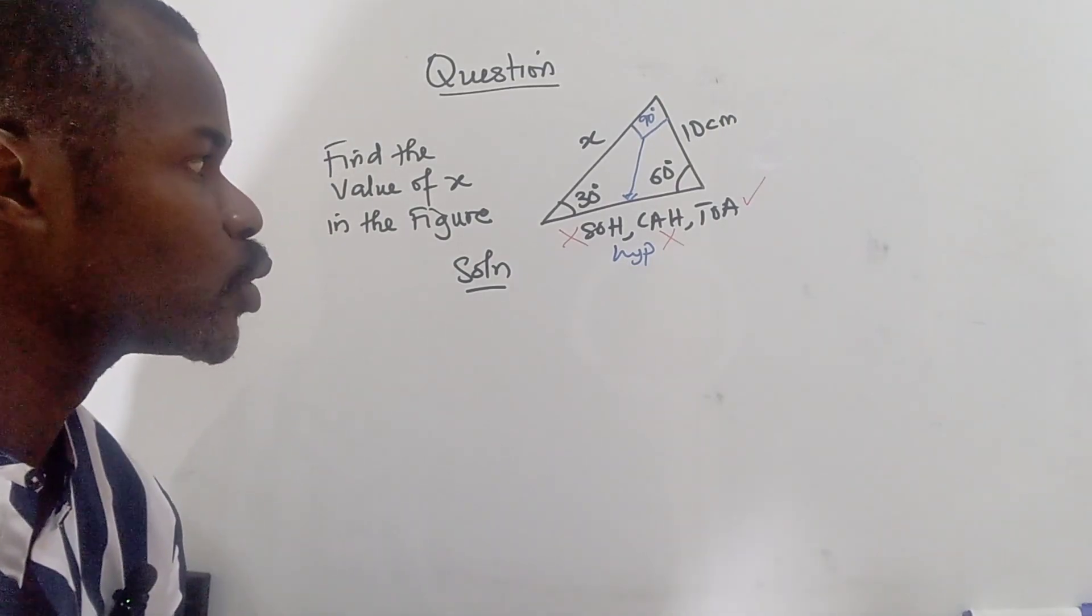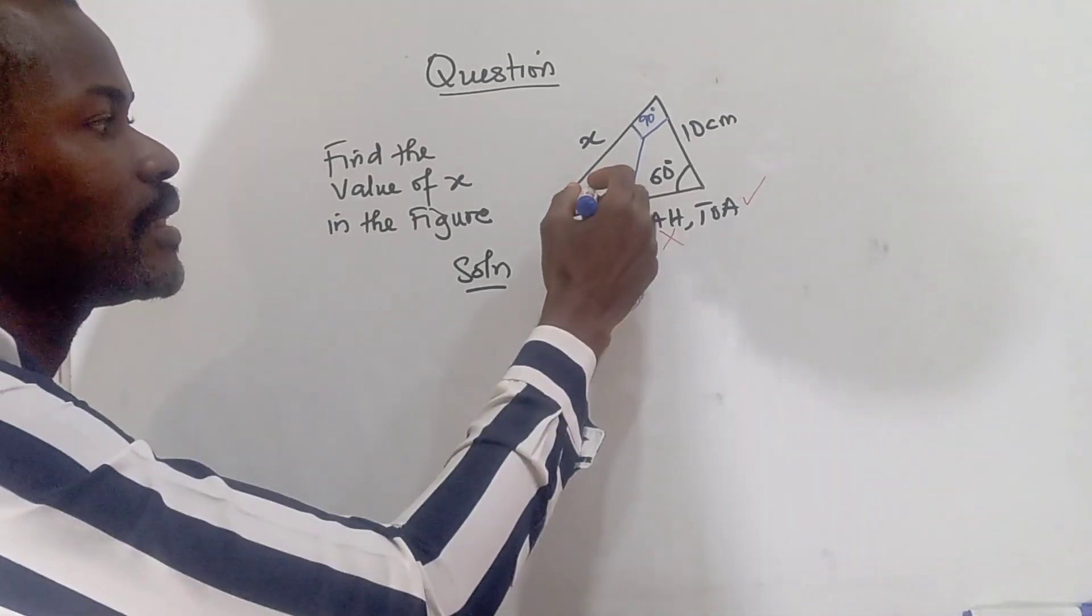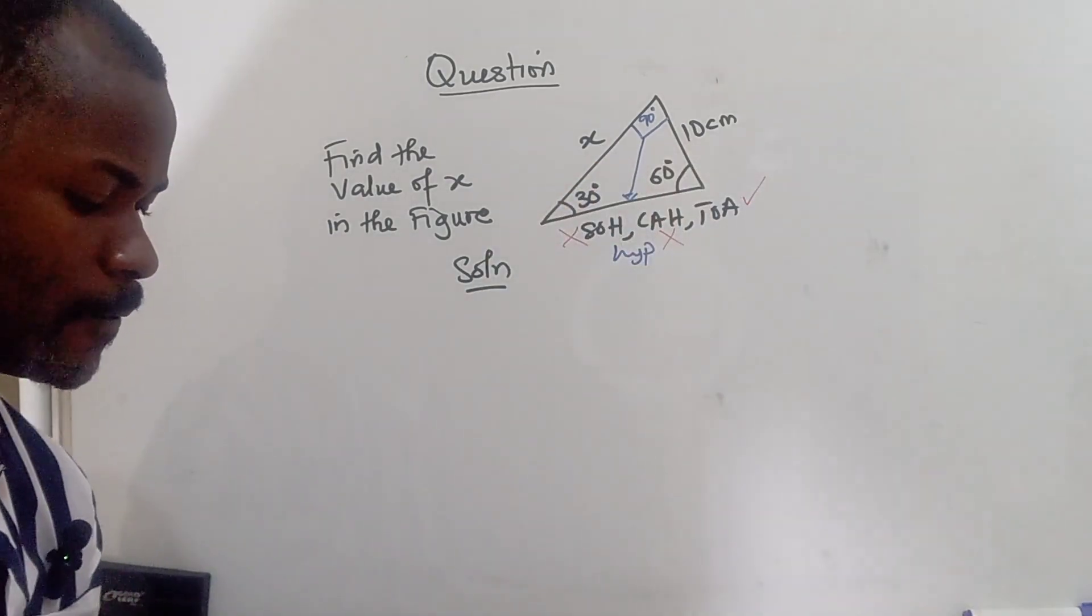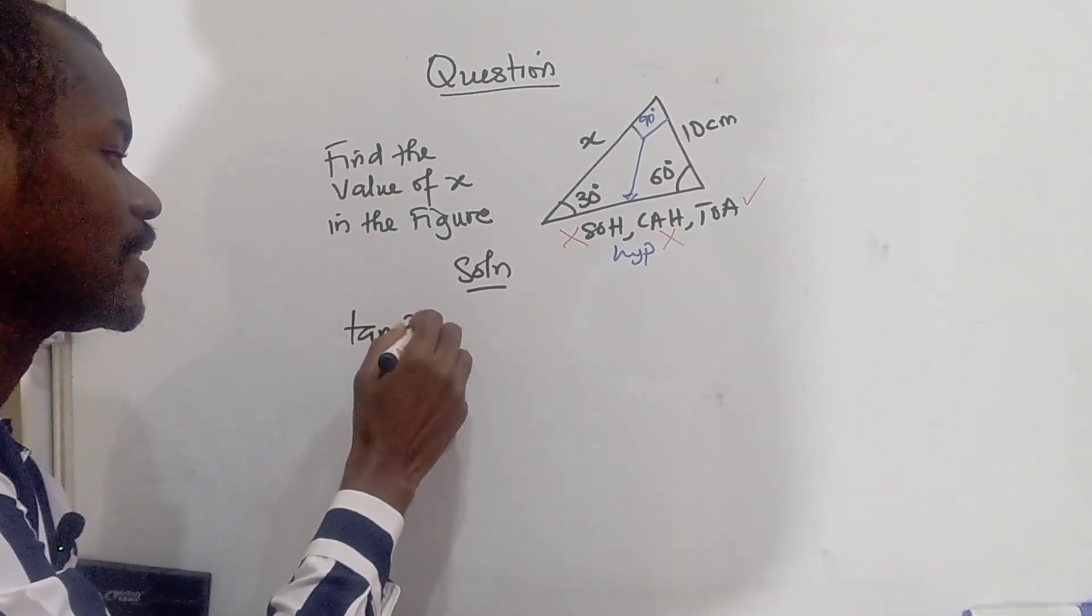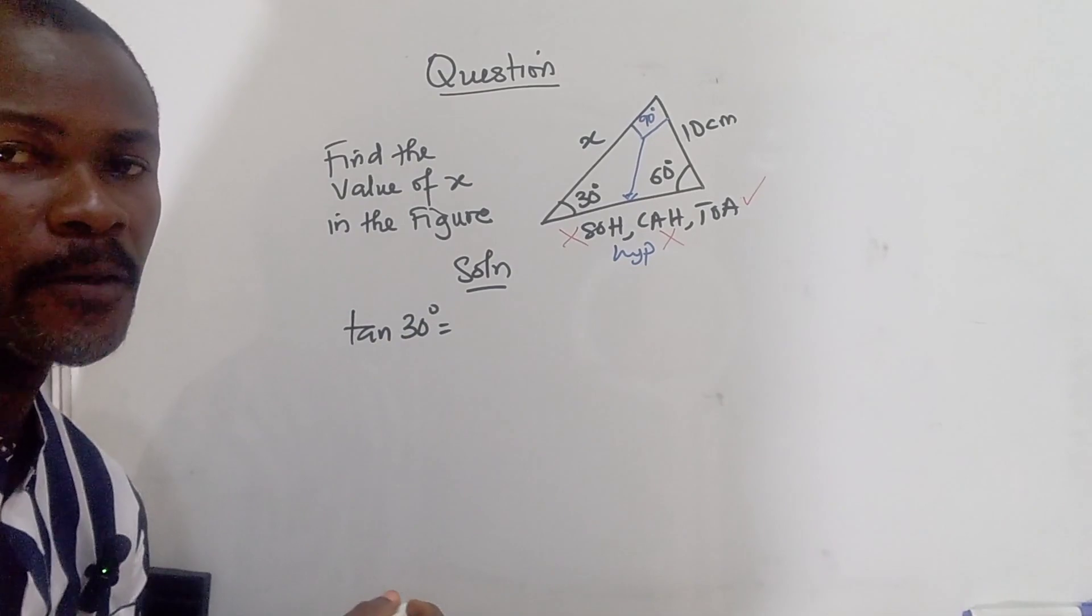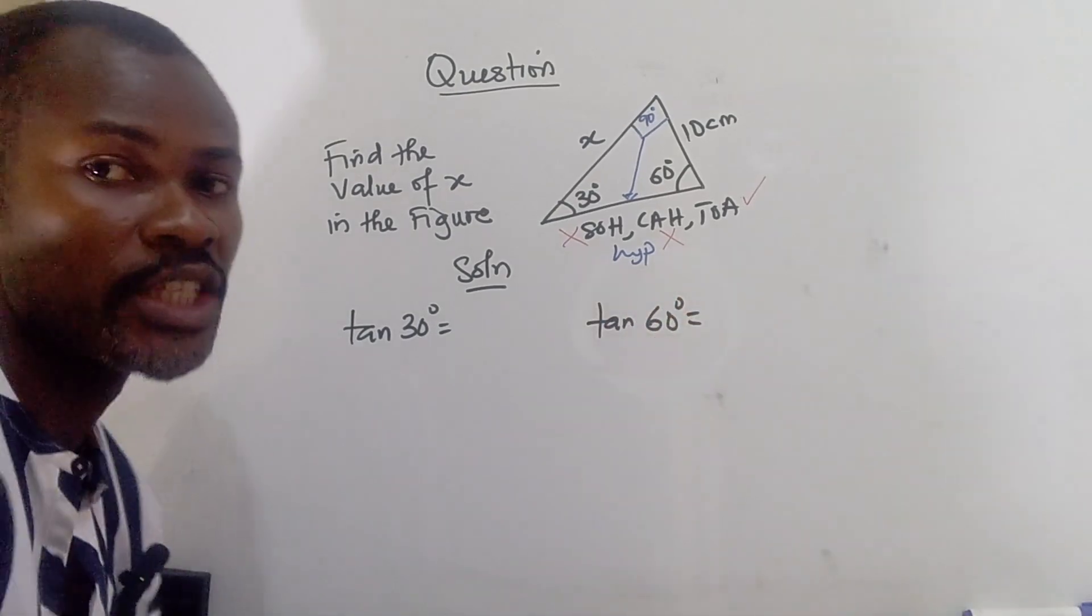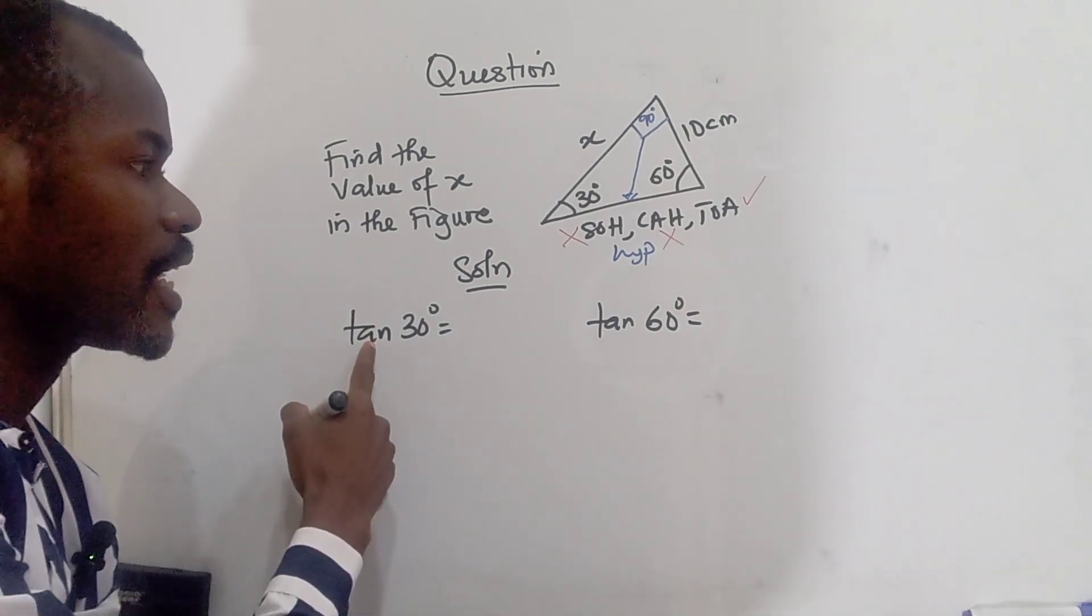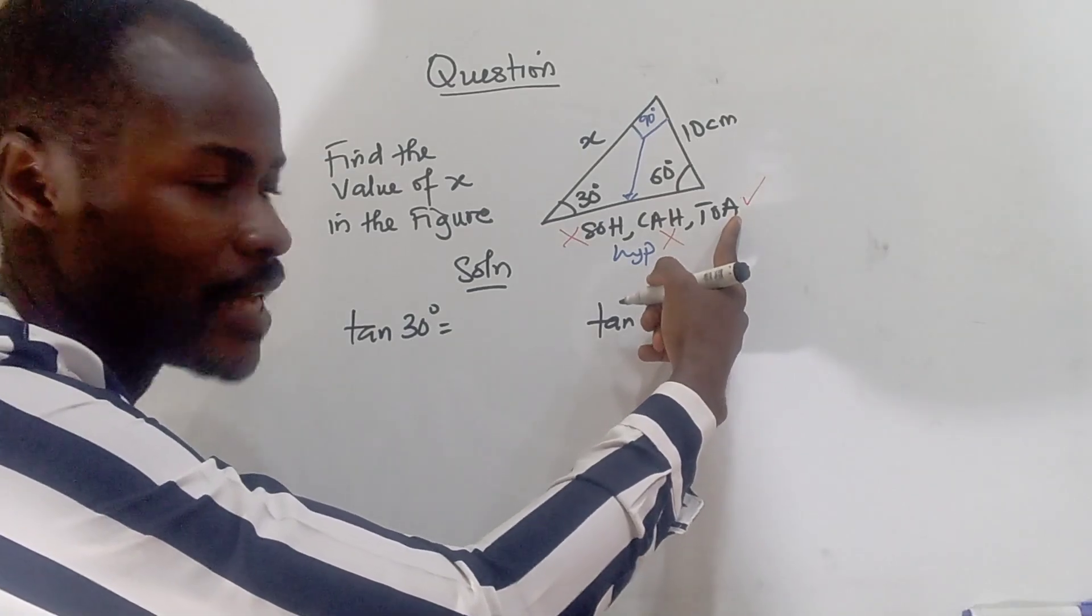Now, to solve it with TOA, we can either solve starting with this angle or this angle. So if I should go with tan 30 degree, or I should go with tan 60 degree, whichever method is going to give us our answer. So let's check for tan. Remember TOA is opposite divide adjacent.